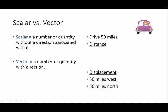What's the difference between distance and displacement? One is a scalar, and one is a vector. And in physics, we're going to have both of these. We're going to have scalars, and we're going to have vectors. A scalar is a number or quantity without a direction associated with it. A vector is some sort of a number with direction associated with it.